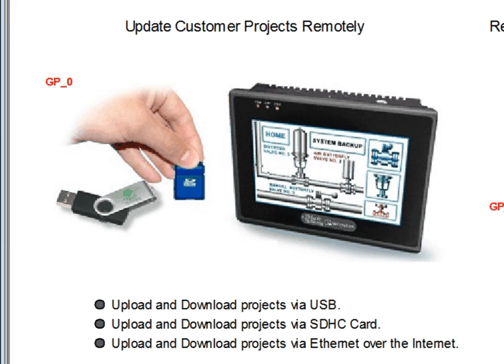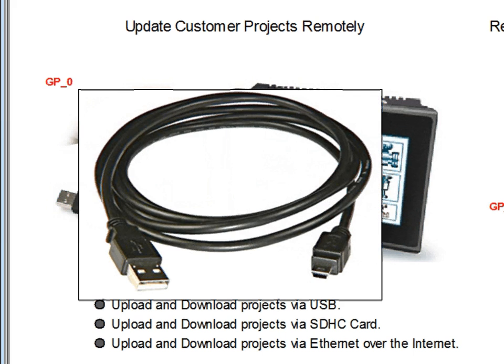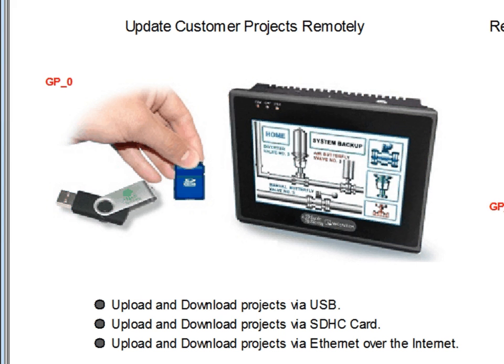One way to download projects to the HMI is by using a Maple Systems USB cable. This cable links your PC to the HMI via a USB cable, and is the easiest way to download your projects to an HMI.